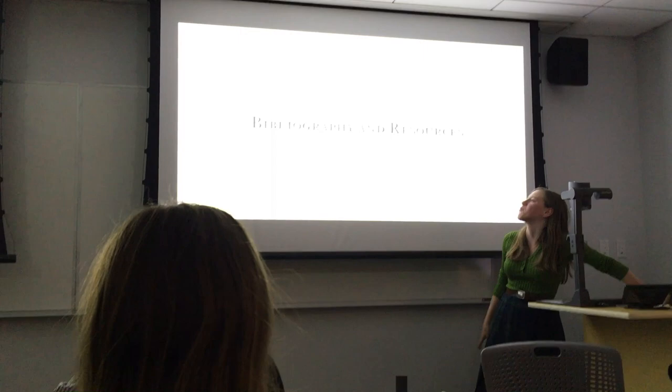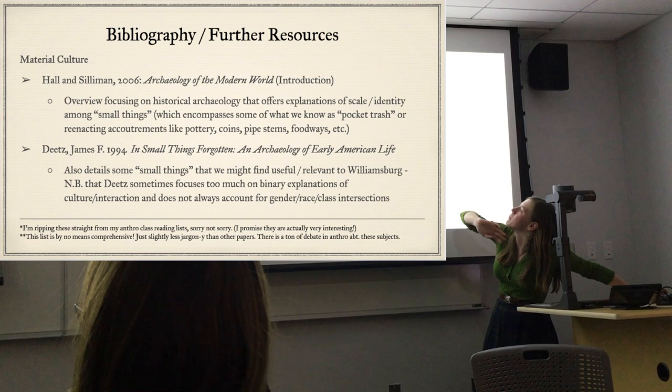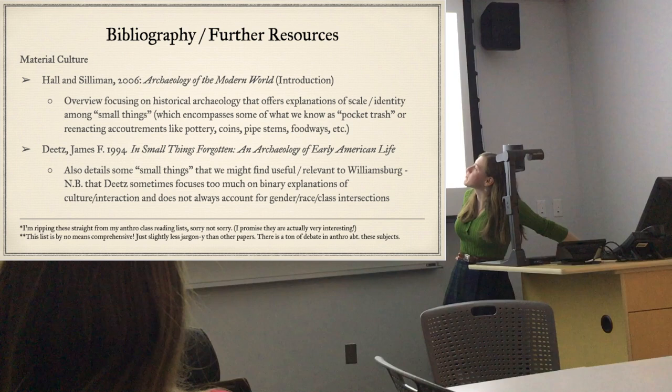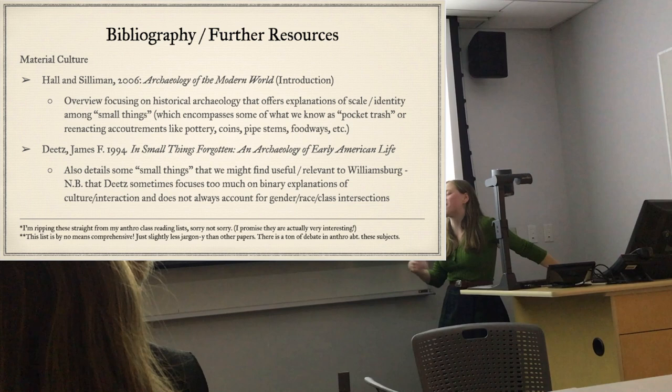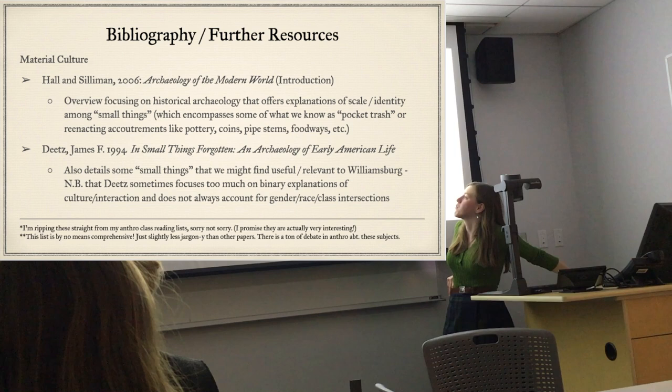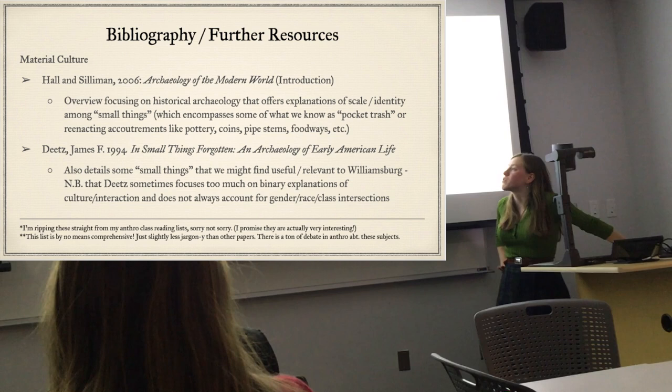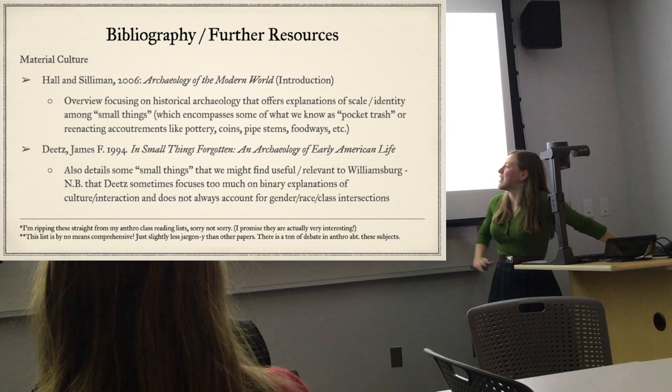That was the main portion of the topic. Now, the bibliography. For material culture: Holland's Archaeology of the Modern World discusses edges of scale and identity with small things - pottery, pipe stems, foodways. James Deetz's In Small Things Forgotten is a really good book for learning about pottery and pipe stems, and how small things can tell us about people's identity and cultures at large, though he does sometimes focus too much on binary explanations. These are from my intro-class reading lists and aren't comprehensive - there's a lot more and a lot of debate, so read and critique in your own time.